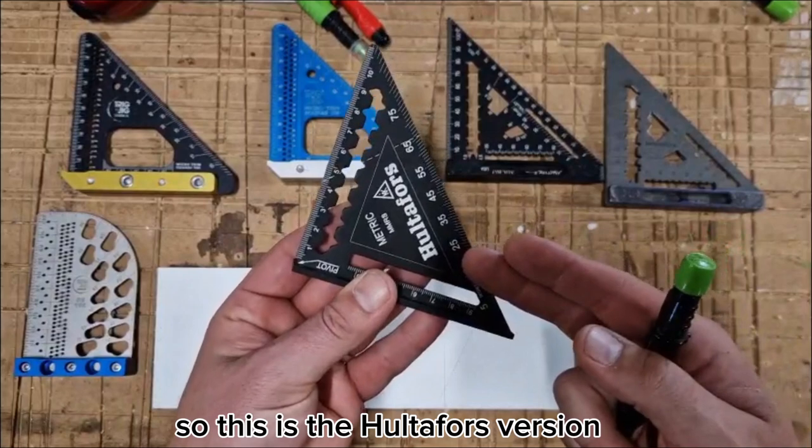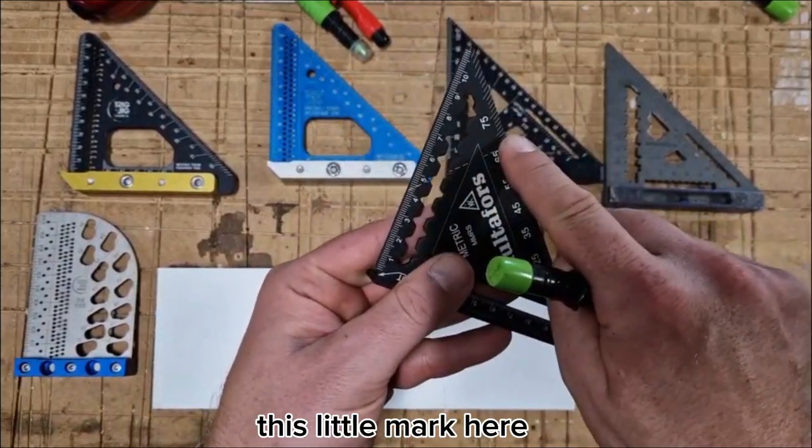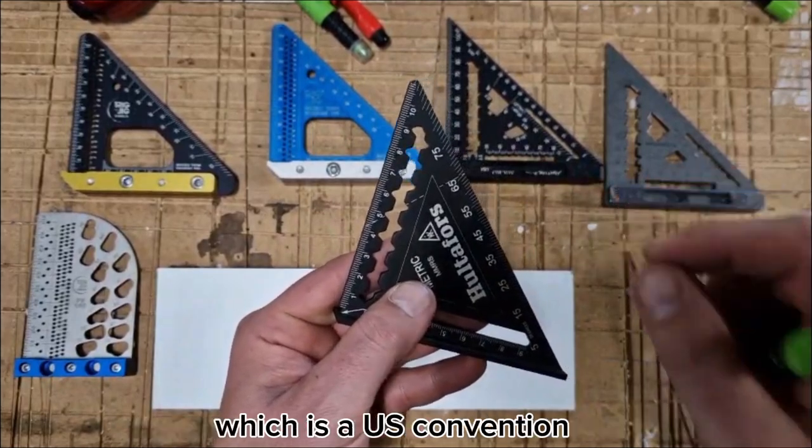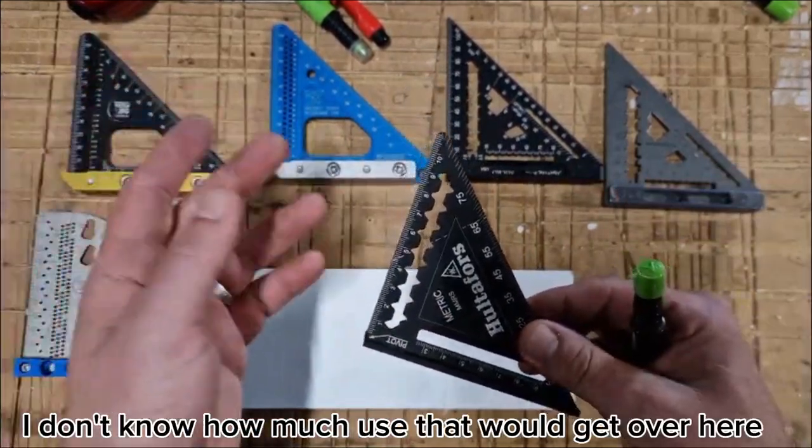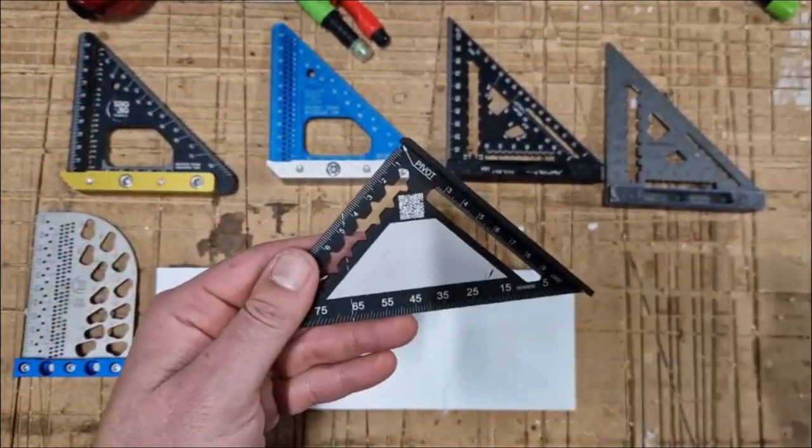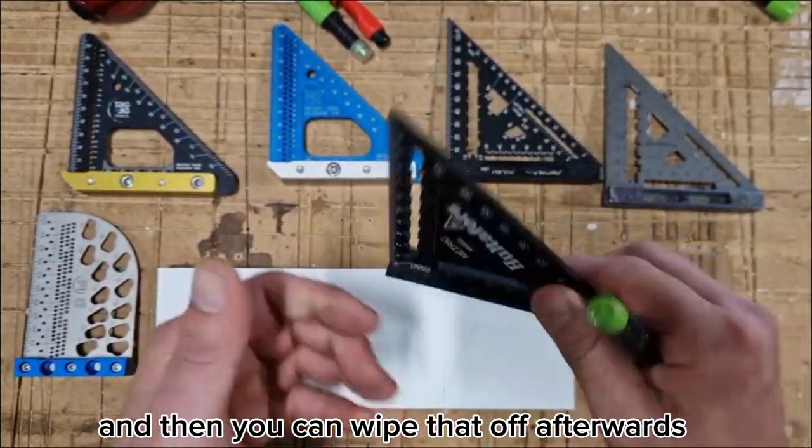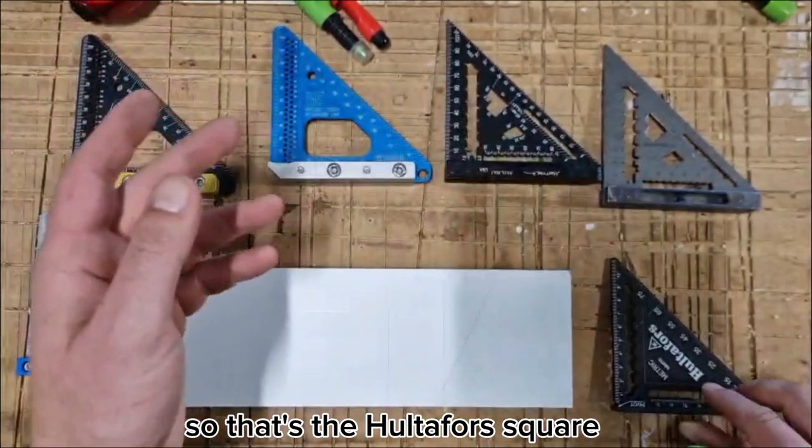This is the Hultafors version. This little mark here is for marking out three and a half inch bird's mouths, which is a US convention. I don't know how much use that would get over here, but it does have a nice handy little pad on the back for writing down measurements and then you can wipe that off afterwards.